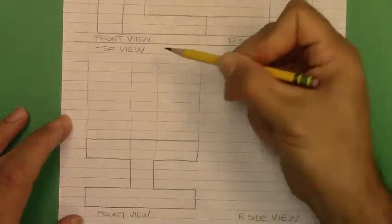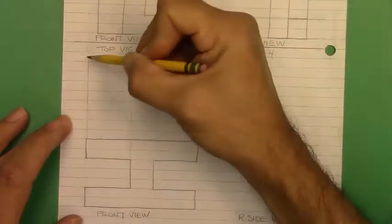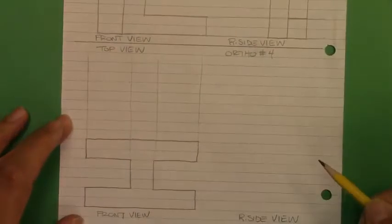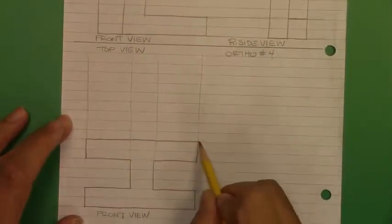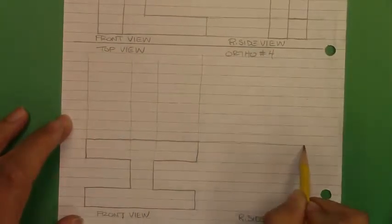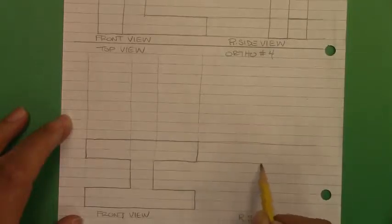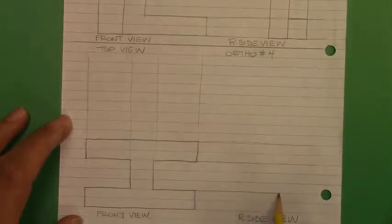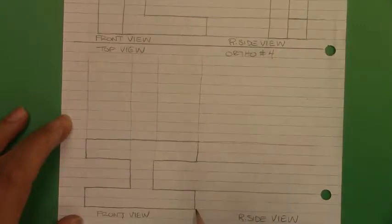Let's make sure that our line quality continues to be light for projection lines and medium for object lines. Now we're going to shoot some over to the right. One, two, three, four.